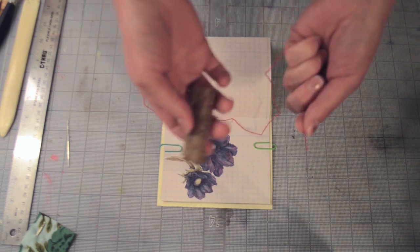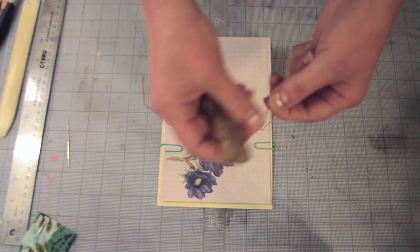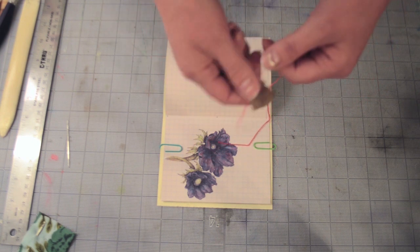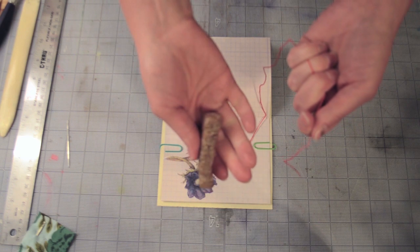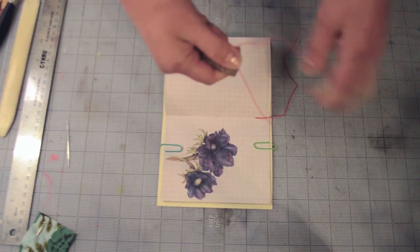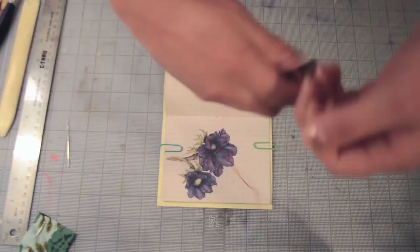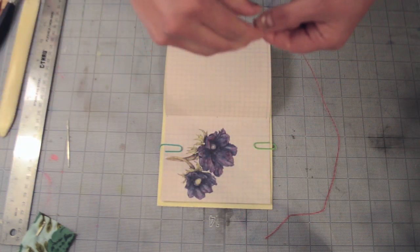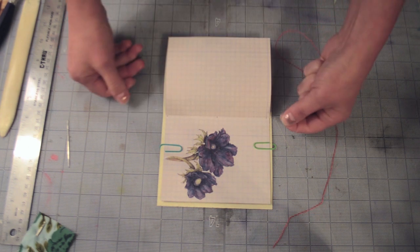And now with your beeswax, if your thread isn't pre-waxed, if you're just using heavy-duty sewing thread or regular linen bookbinding thread, you can take your piece of beeswax and just start running your thread through.